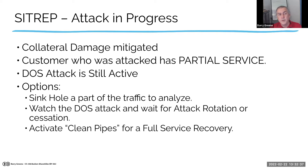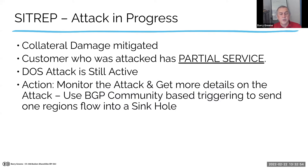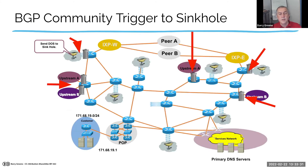One old technique that still works: the customer rotates their service. If the service was sitting on the .55 address, they move it to .155, change their DNS, change all the pointers, and change the service around — so their customers are back in operation. The attacker is still hitting .55, which is now being sinkhled. Remember, the attack can impact your infrastructure, impacting a whole range of customers, not just the customer under attack.